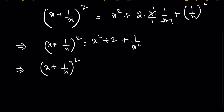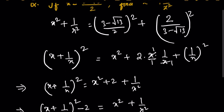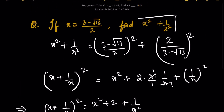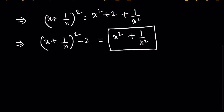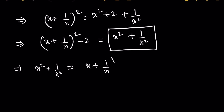From that identity, we subtract 2 from both sides, and we are left with x squared plus 1 by x squared. So we can rewrite: x squared plus 1 by x squared equals (x + 1/x) whole squared minus 2. This is what we need to find.